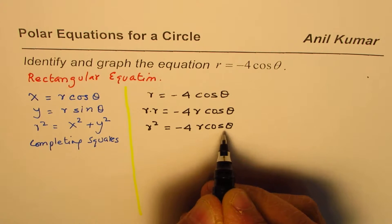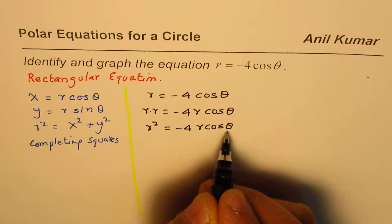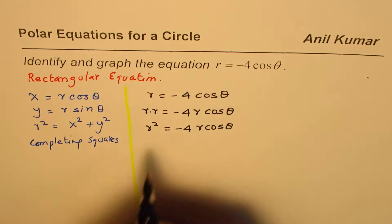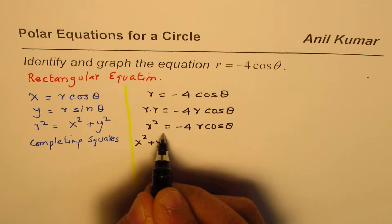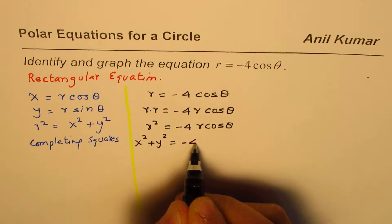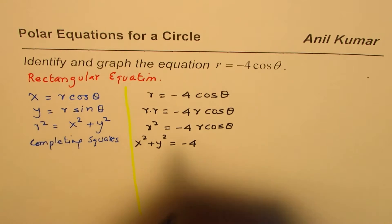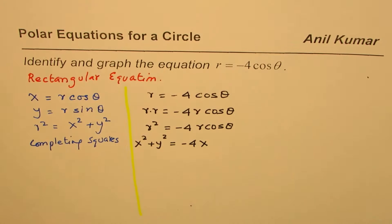Now, we can easily write all these terms, r and thetas, in terms of x and y. r squared is x squared plus y squared. So, we substitute x squared plus y squared on the left side. And for r cosine theta, we can write x. So, we get minus 4x.